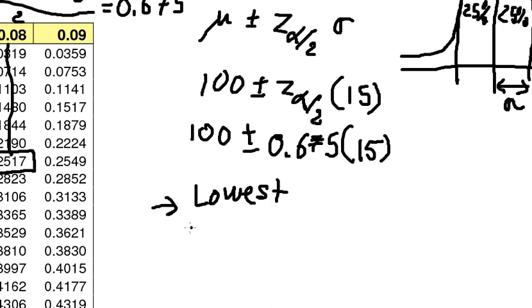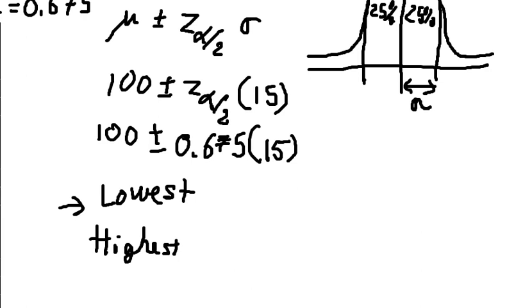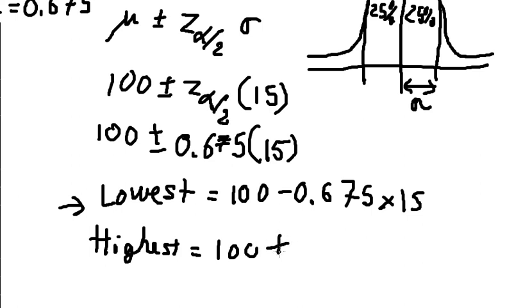So that means that the value of Z to make 0.675, we have the lowest 100 minus 0.675 multiplied by 15 equals 89.875, and the highest, that's about positive 0.675 multiplied by 15.